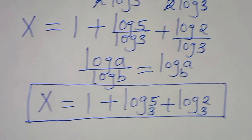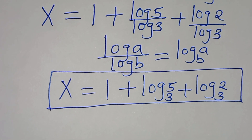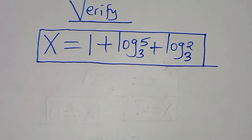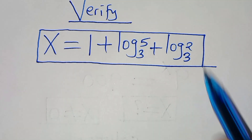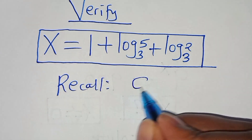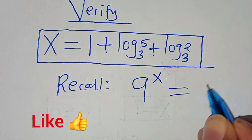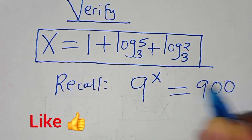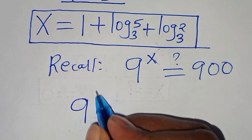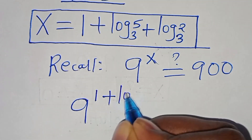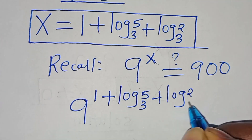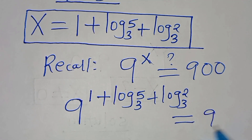The next step is to verify that this value of x actually satisfies the equation by following these steps. We have that 9 to the power of x is supposed to give us 900. Let's substitute the value of x, so that we have 9 to the power of (1 plus log base 3 of 5, plus log base 3 of 2). This should give us a value of 900.